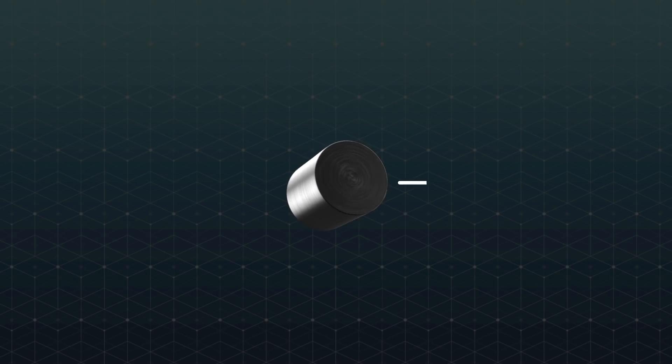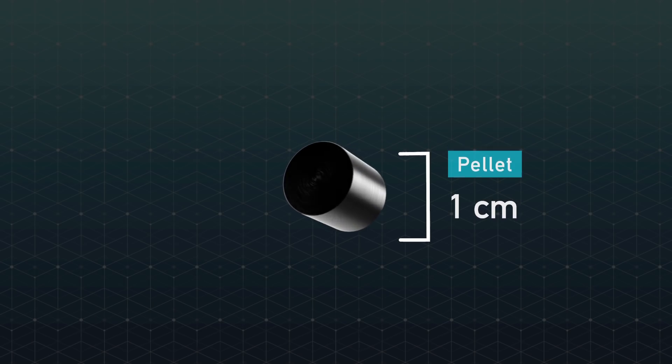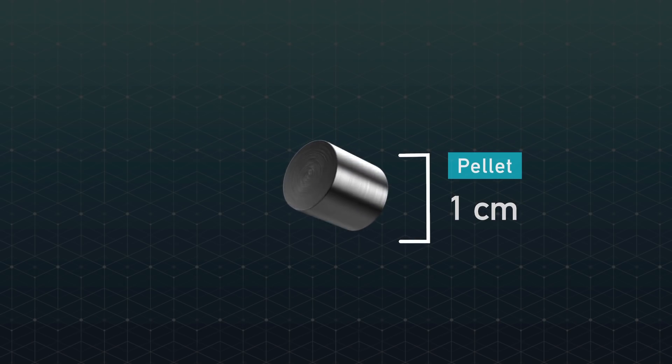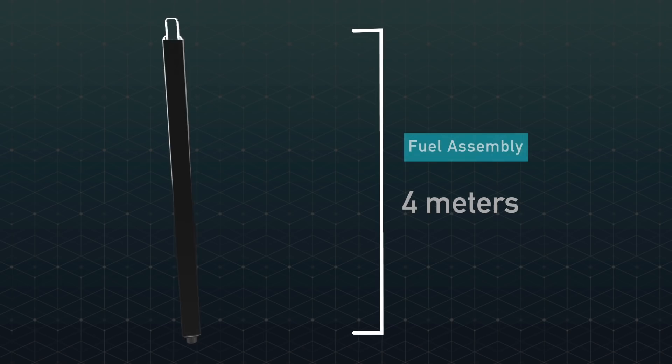Nuclear waste, specifically spent fuel from commercial nuclear reactors, is made of small ceramic pellets of a compound called uranium dioxide. These pellets are held in long tubes called fuel rods, and the rods are arranged into bundles called fuel assemblies. The shape and size of a fuel assembly depends on the type of reactor it comes from.